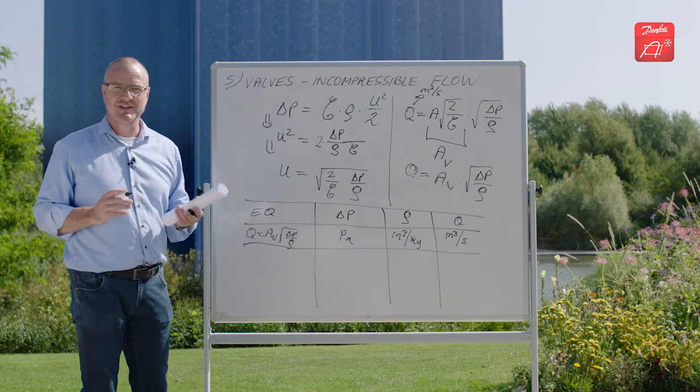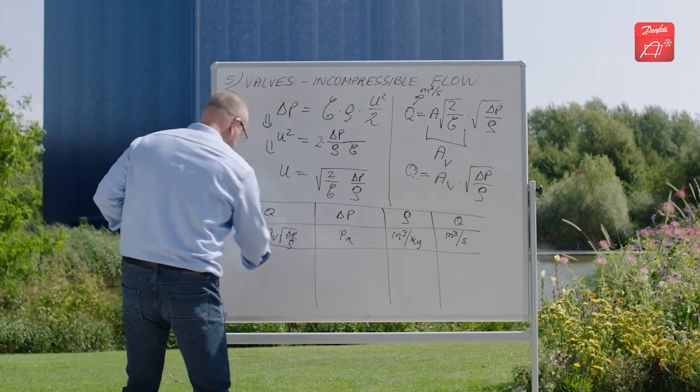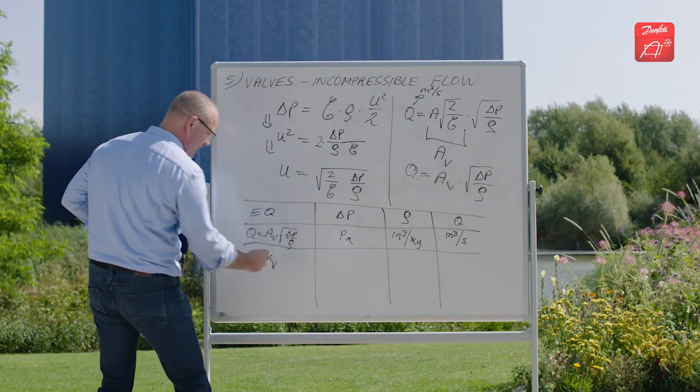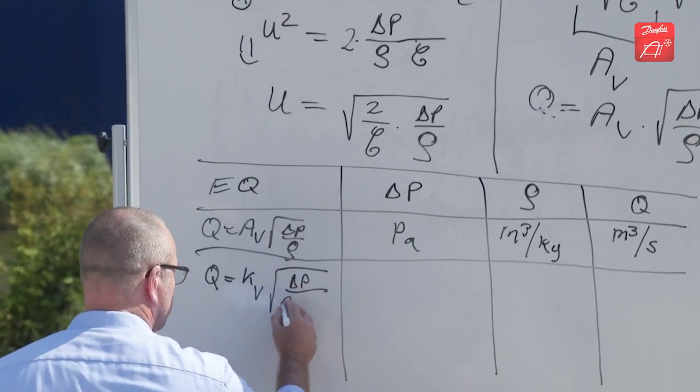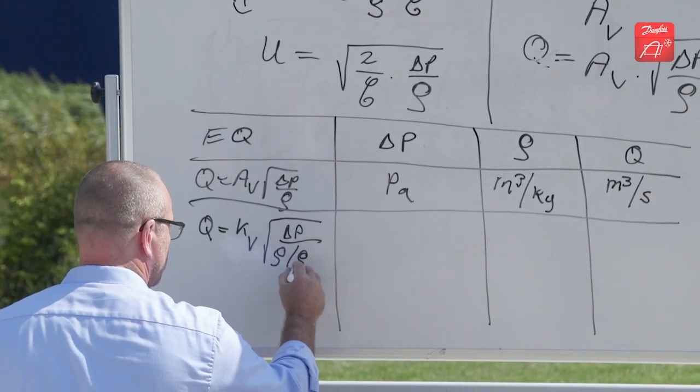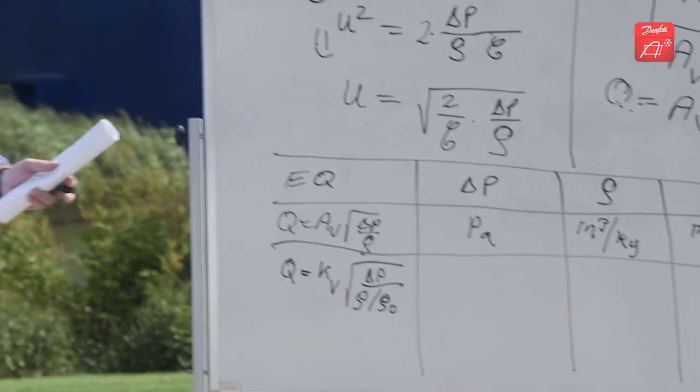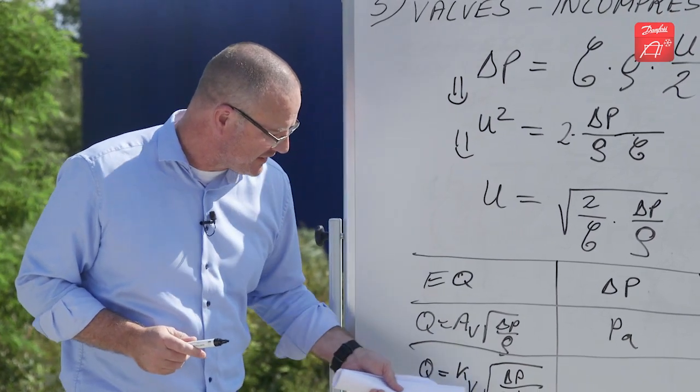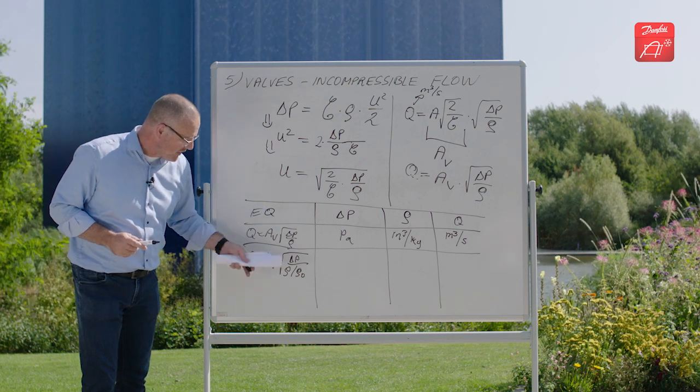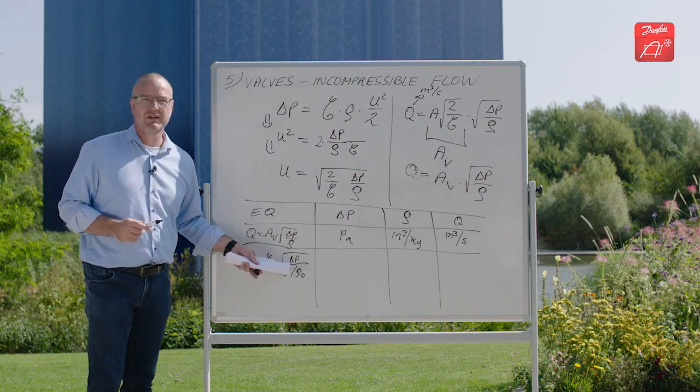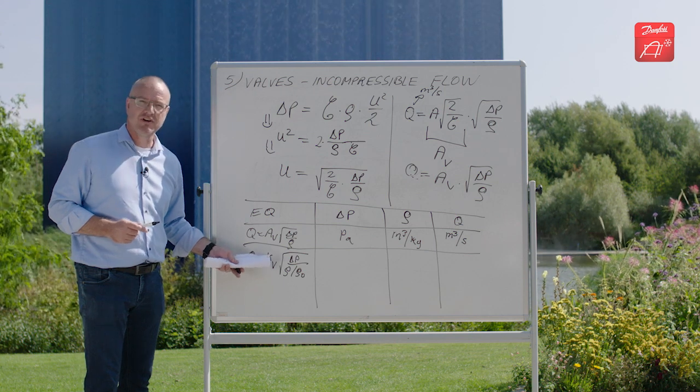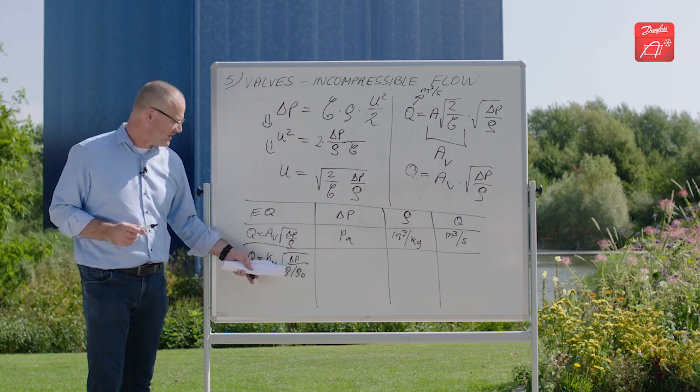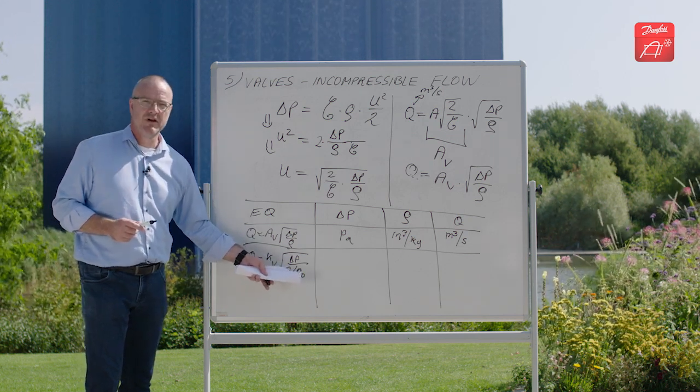Then you have the equation if you use the normal international units, where you call the flow coefficient KV. Now for tradition: because these equations were evolved in the 19th century, you used water all the time. When you did measurements of KV values of valves, you did it on water, then you took the density of the fluid you were going to use and divided it by the density of water where you measured.